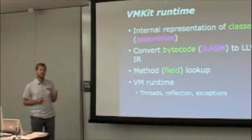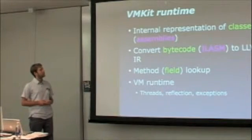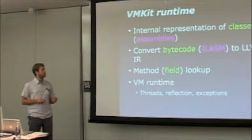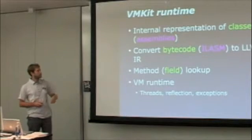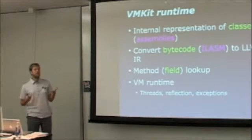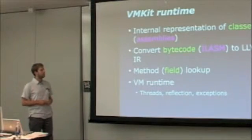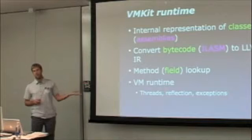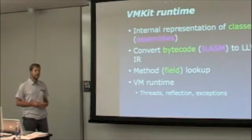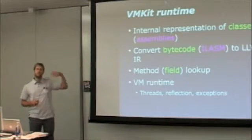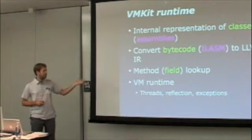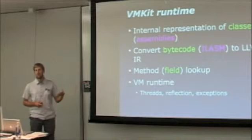VMKit has an internal representation of classes in the case of Java, and in the case of .NET, it's assemblies. In green you have the Java side, in purple it's the .NET side. VMKit will convert your JVM bytecode to LLVM IR, or your MSIL to LLVM IR. VMKit will perform method and field lookup to do lazy compilation and just-in-time class loading. And finally, VMKit is a runtime for virtual machines, so you can run threads, launch threads, and there's class reflection and exception handling.